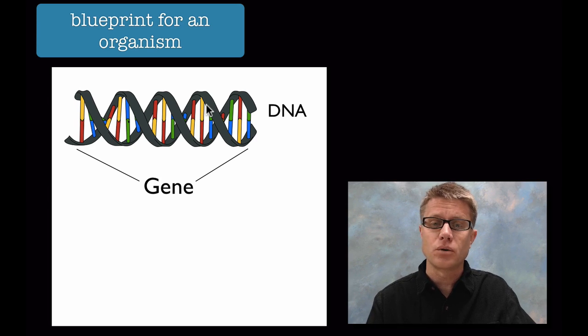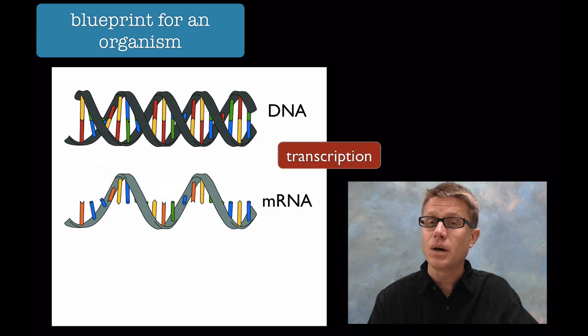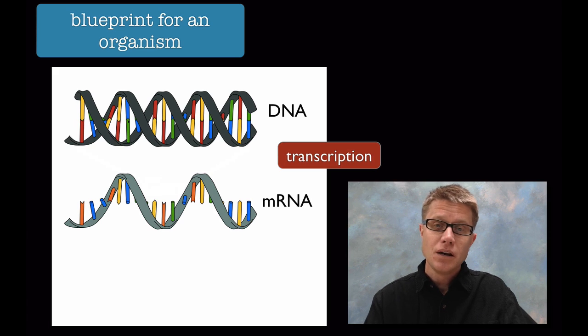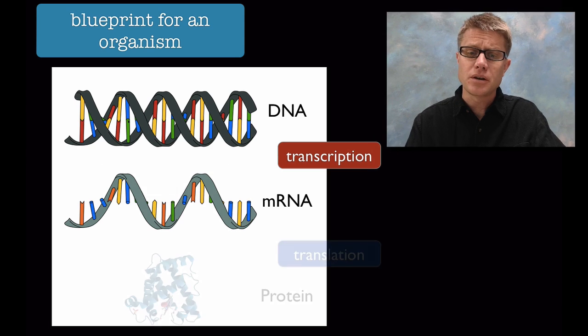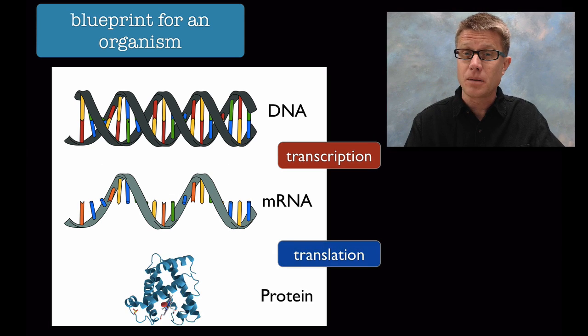How is it the blueprint for an organism? A section of DNA is a gene—a number of different nucleotides in a specific order. Our cell converts that DNA, which sits safely in the nucleus, into messenger RNA. That process is called transcription. It's like writing down a recipe and sending it out to the rest of the cell. The machinery of the cell converts that messenger RNA into a protein.